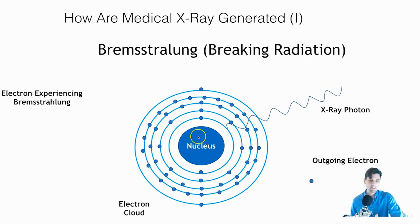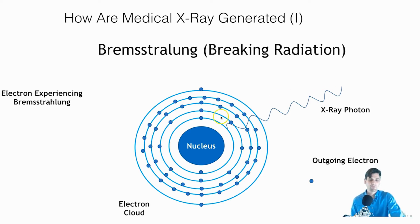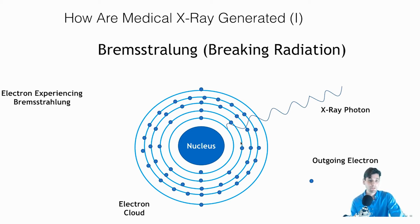In order to conserve momentum, an x-ray photon is ejected. If the electron comes out in one direction, the x-ray photon will come out in the opposite direction. This happens in a continuous manner: an electron could be steered just a small amount by the nucleus, in which case a very low-energy x-ray photon is emitted; or the electron could deposit nearly all of its energy into the x-ray photon. This means there's a smooth, relatively continuous spectrum of possible energies that can be generated via Bremsstrahlung radiation.